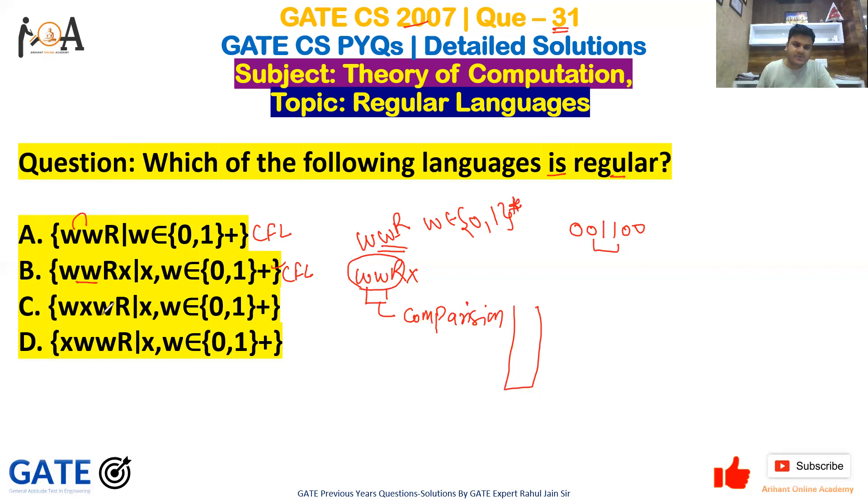If you see option C, that is {wxwR | w,x∈{0,1}+}, here w belongs to {0,1}. If my string is starting with 0, then this x can take any combination over 0 and 1, and again my string would end with 0. Because if 001 is my string, then 100 would be my wR portion, and between them we have x.